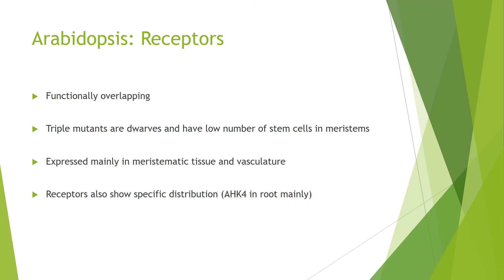These receptors functionally overlap; however, in one specific response, one receptor might be more dominant than the other two. If you knock out all three in triple mutants, they are actually dwarfs with a lower number of stem cells and meristems, indicating the importance of cytokinin for later growth stages and stem cell pool maintenance. The receptors are found mainly in meristematic tissues and vasculature, but also ubiquitously throughout the plant at lower levels, with some receptor-specific distribution — for example, AHK4 is mainly in the root.